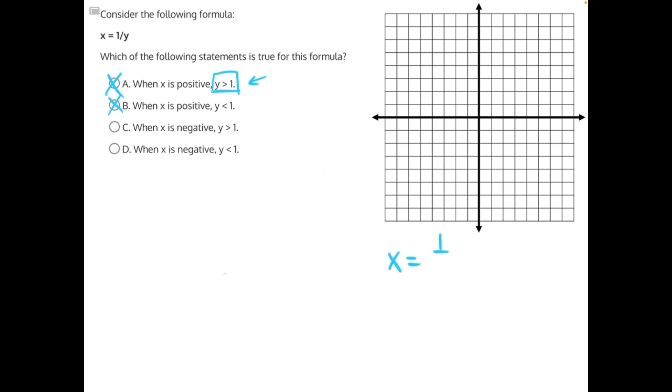x equals 1 over y. Let's do opposite operations. We'll multiply both sides by y. These will cancel, giving us x times y equals 1.